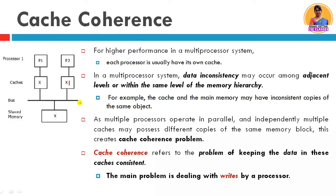In a multi-processing environment, where multiple processors with multiple caches and shared memory exchange data independently, there are different copies of data in different caches along with the shared memory. This problem is called the Cache Coherence Problem. Cache Coherence refers to the problem of keeping the data in these caches consistent.